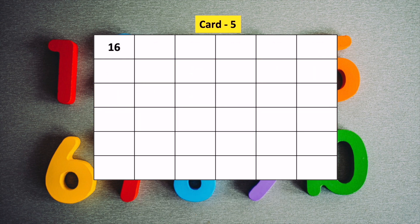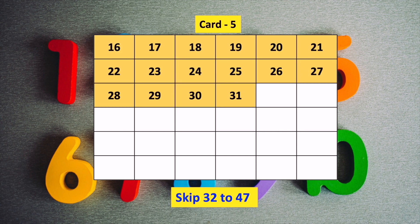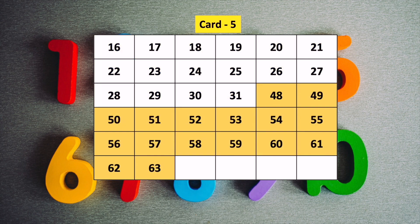For the fifth card, we will start from number 16. In this card, we write 16 numbers and then skip next 16 numbers. So we write from number 16 to 31, and then skip number 32 to 47. Then we write number 48 to 63.